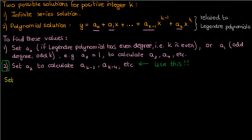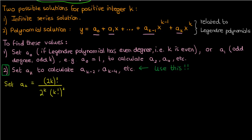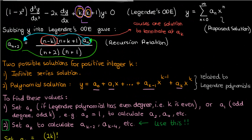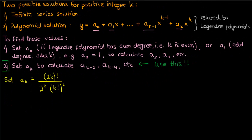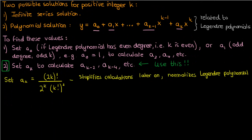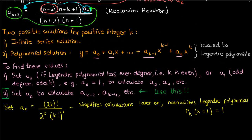We're going to set a_k equal to (2k)! divided by 2^k times (k!)^2. This is a constant because k is specified in the ODE — it's given to you. Don't confuse k with the running index n; they are different. We chose this particular value because it simplifies the algebra and because it normalizes the Legendre polynomial, making it equal to 1 at x equals 1 regardless of the degree.